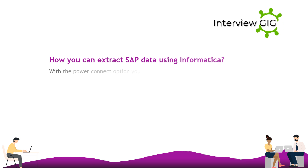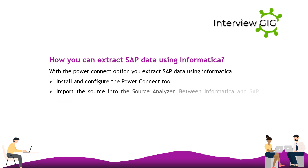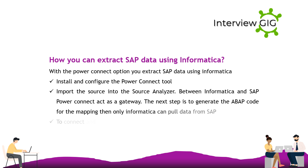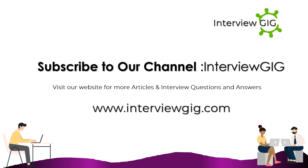To extract SAP data using Informatica with the PowerConnect option: install and configure the PowerConnect tool, import the source into the Source Analyzer. PowerConnect acts as a gateway between Informatica and SAP. The next step is to generate the code for the mapping, after which Informatica can pull data from SAP. PowerConnect is used to connect and import sources from external systems.